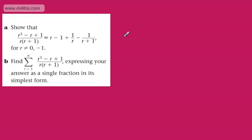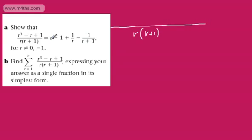Let's just think logically. It's pointless starting from the left-hand side. Let's start with the right-hand side and get a common denominator. The common denominator is going to be r(r+1). If we set up a fraction now, what do we need to multiply each term by? We need to multiply by all of the denominator. So we get r multiplied by r(r+1) on the first term.